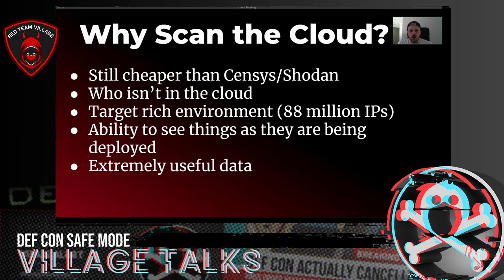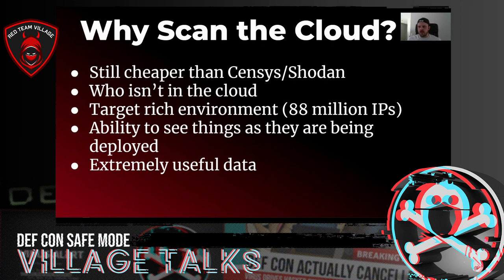The other part is just who isn't in the cloud these days? You'd be hard pressed to find a large Fortune 500 company that's not running some part of their infrastructure in the cloud. It's a huge target-rich environment. If you look at just Azure, AWS, and GCP, you're looking at something like 88 million IP addresses just in their compute space — not talking about Lambda functions, but 88 million IPs that could actually be spun up for someone's instance. Organizations use the cloud to spin up quick development boxes and test things on the edge cheaply and easily.